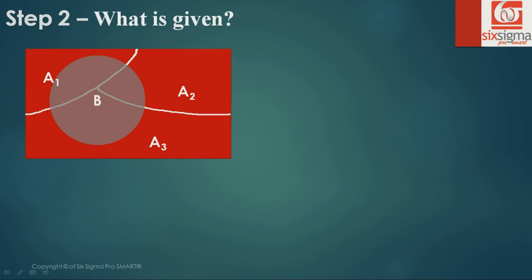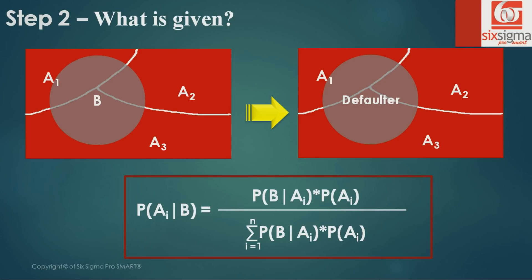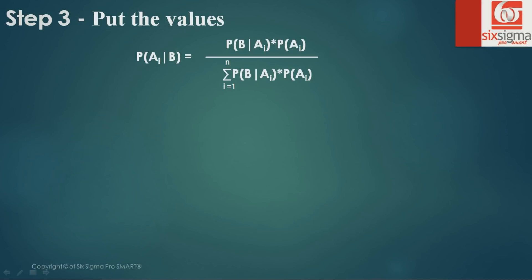For a minute, let's go back to what we were doing when we were deriving Bayes' theorem. Did we not look at something like this? All we have changed is that now the event B refers to defaulters. We know the general form of Bayes' theorem. All we are required to do, having noted down all the available values, is put those values in the formula. Step three is just putting the values in the formula we have already derived.